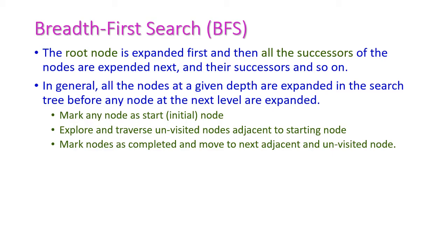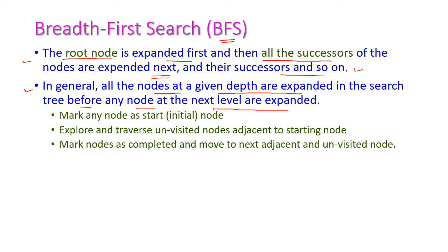The first one is breadth first search, otherwise called BFS. Here the root node is expanded first, and then all successors of the root node are expanded next, and then their successors, and so on. In general, all the nodes at a given depth are expanded in the search tree before any node at the next level is expanded.